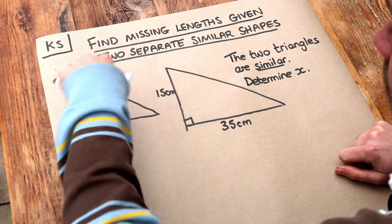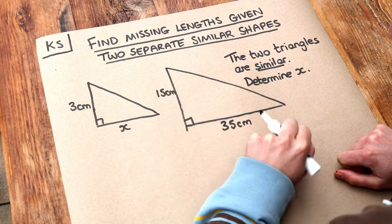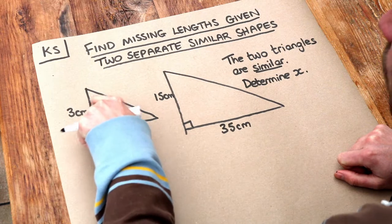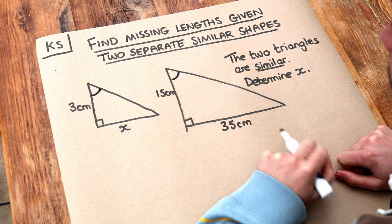So for example, if this was to get twice as big, then this bottom length would also get twice as big. And for triangles in particular, if they're similar then they have all the same angles, so that angle is the same as that angle, that right angle the same as that right angle, etc.